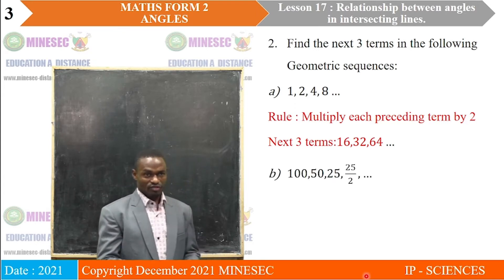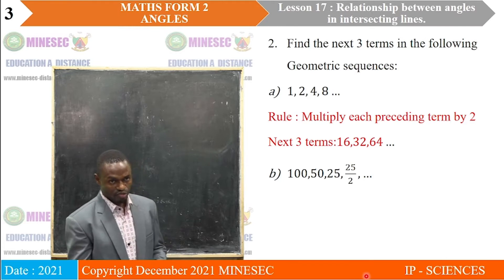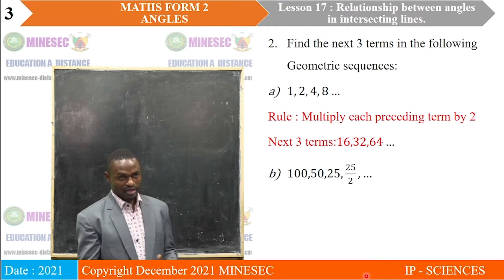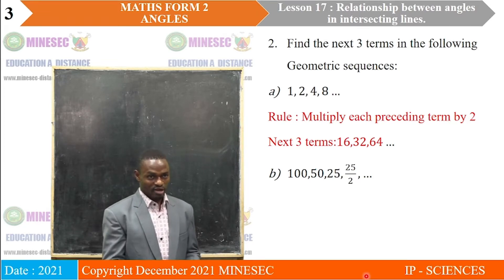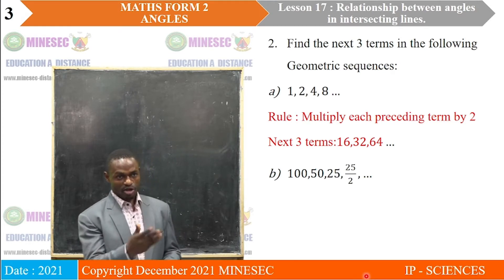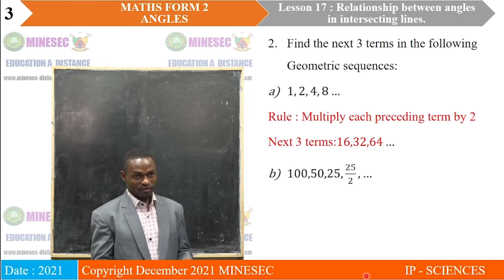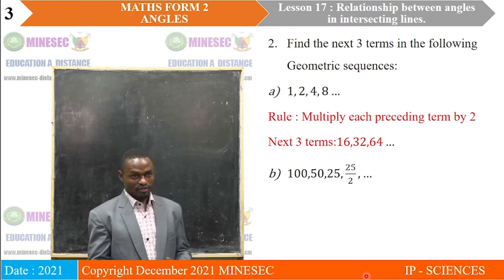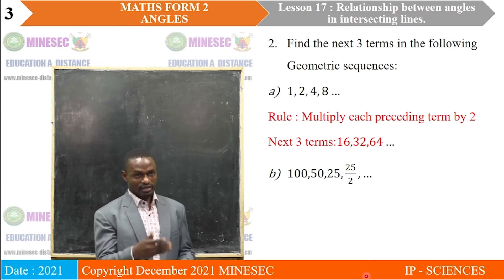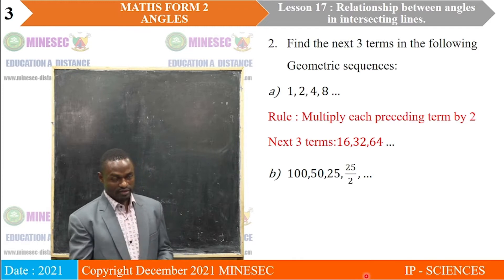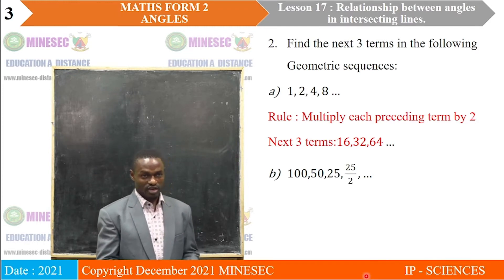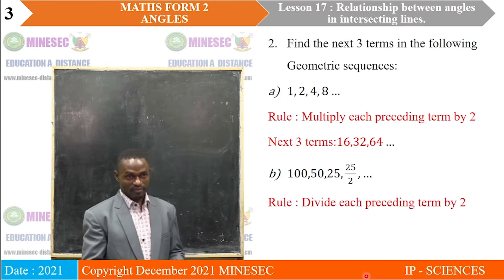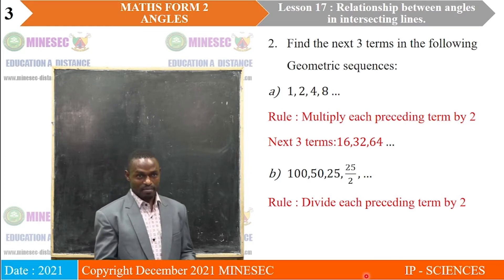B: 150, 25, 25 over 2. Looking at that sequence, we are already told these are geometric sequences; we just need to identify whether we are multiplying or dividing. From 100 to 50, they are divided by 2; 50 to 25, divided by 2; and the last term from the given sequence is 25 over 2. So the rule is: divide each preceding term by 2.